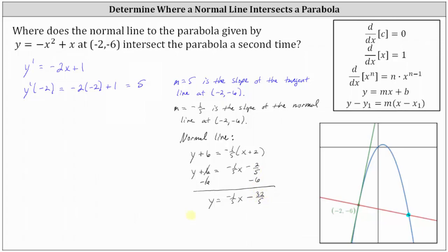Now that we have the equation of the normal line, we need to find the second intersection point of this line and the parabola given by y equals negative x squared plus x, which means we need to solve the system of equations: y equals negative x squared plus x, and y equals negative one fifth x minus thirty-two fifths. Let's solve this using substitution: negative x squared plus x equals negative one fifth x minus thirty-two fifths.